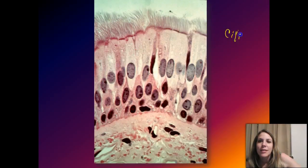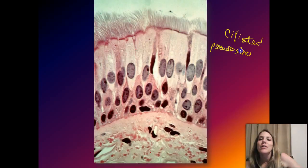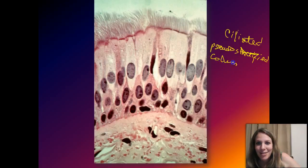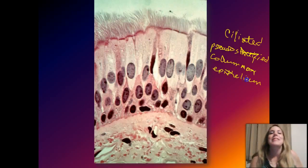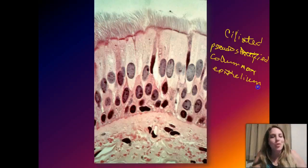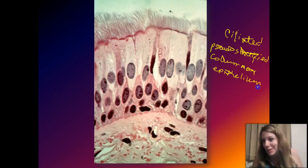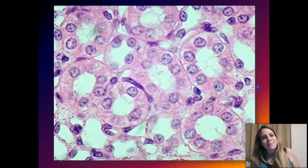Not only is it pseudostratified columnar epithelium, notice all the cilia at the top. So the proper full name is ciliated pseudostratified columnar epithelium — ciliated because there are cilia, pseudostratified because all cells touch the basement membrane but don't all reach the apical surface, columnar because the cells are column-shaped, and epithelium because that's what it is.